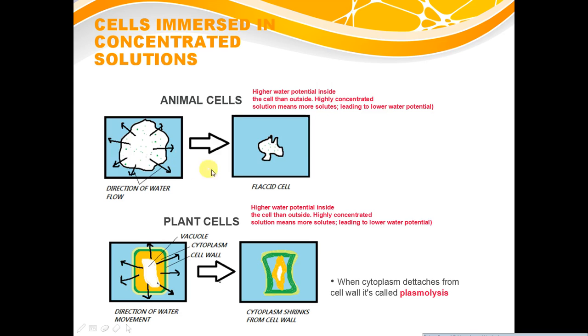The cells are going to lose water, and for an animal cell, it's going to result in this flaccid looking cell. It just means it has this deflated kind of structure because it's lost so much water.